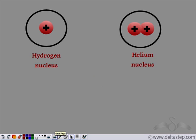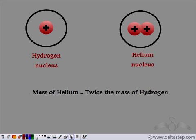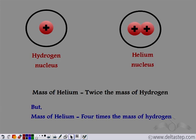Scientists took two nuclei: the hydrogen nucleus and the helium nucleus. We know that the entire mass of an atom is concentrated in the nucleus. Hydrogen has one proton and helium has two protons. So the mass of helium should be twice the mass of hydrogen. But when experiments were performed, it was observed that the mass of helium was four times the mass of hydrogen.